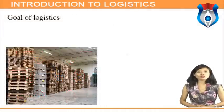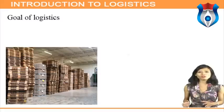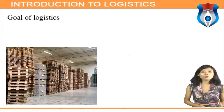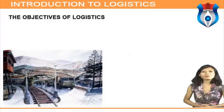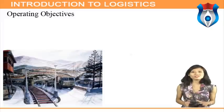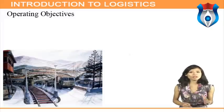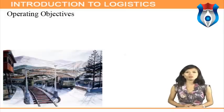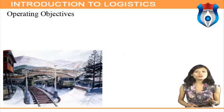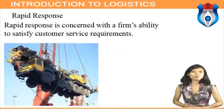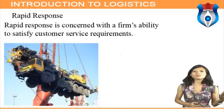The goal of logistics is the management of the flow of resources from the point of origin to the point of destination to meet the requirements of customers or corporations. In terms of logistical system design and administration, each firm must simultaneously achieve at least six operational objectives, which are the primary determinants of logistical performance.